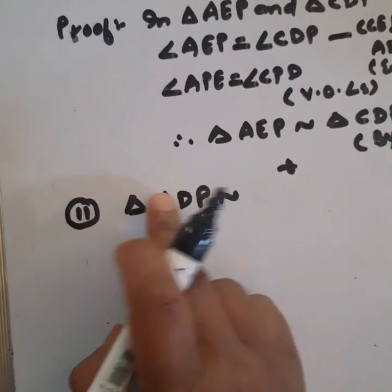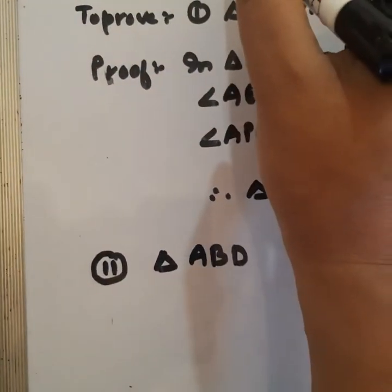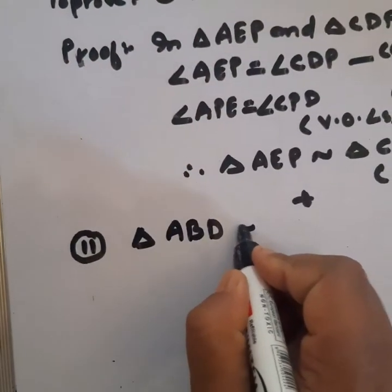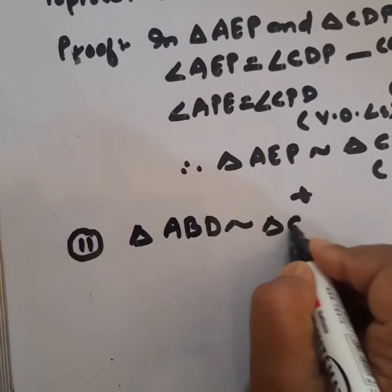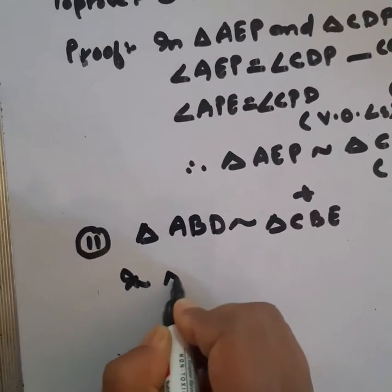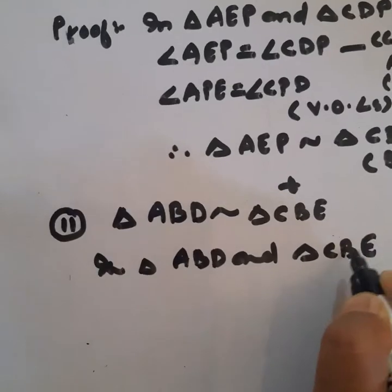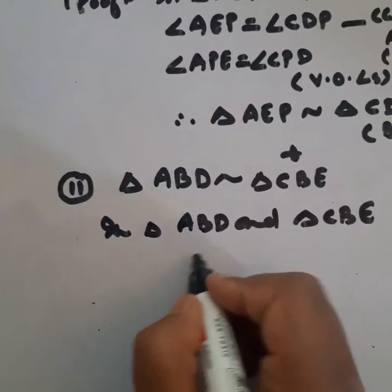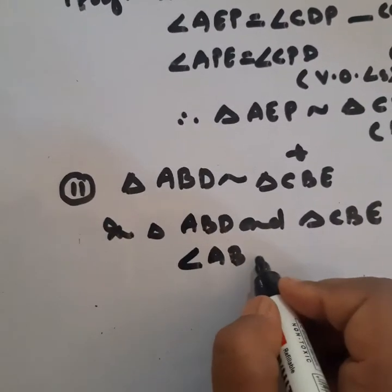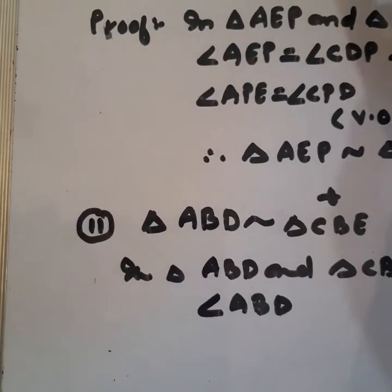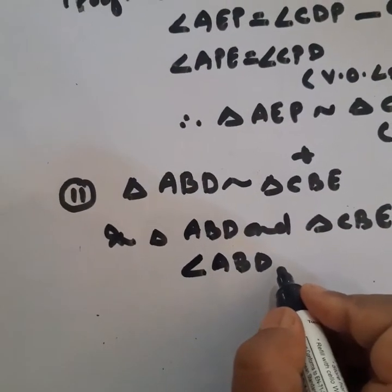Second part: triangle ABD is similar to triangle CBE. In triangle ABD and triangle CBE, angle ABD or angle CBE, means angle B is equal to angle B. Common between the two, it's a common angle.